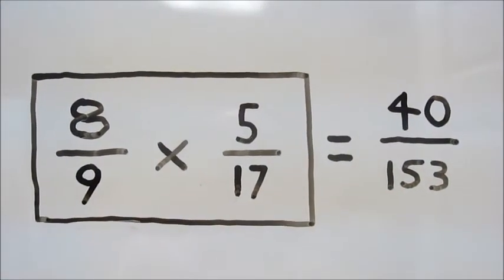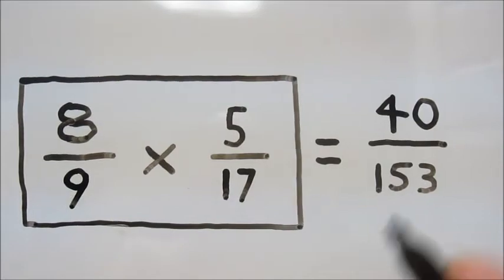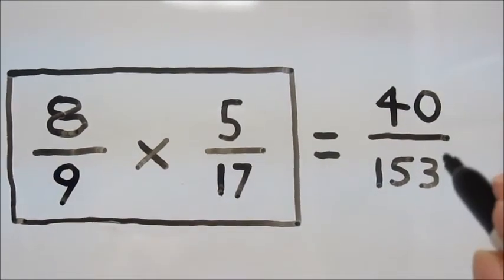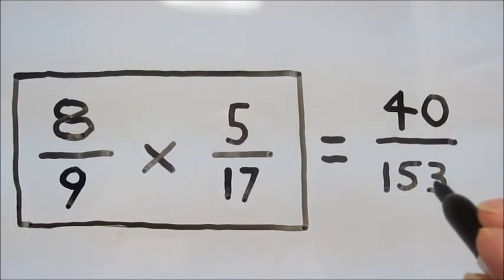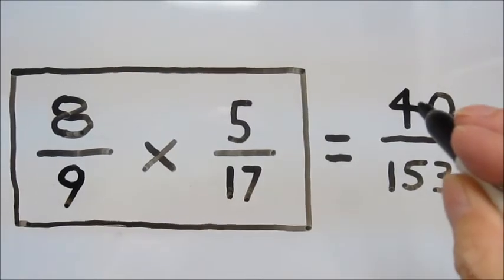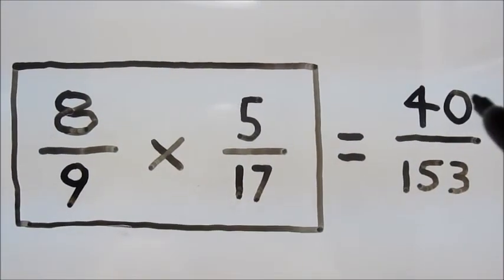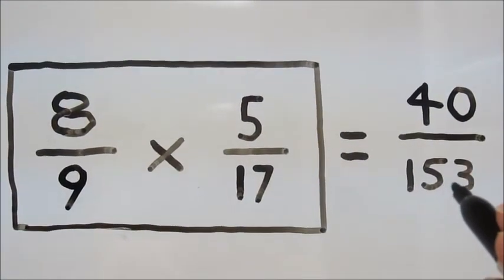Once again, we cannot simplify further because 40 does not go evenly into 153 and there are no factors of 40 that also go into 153.